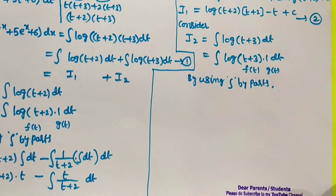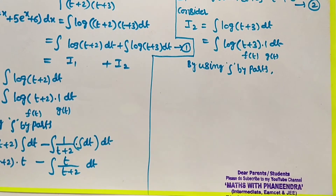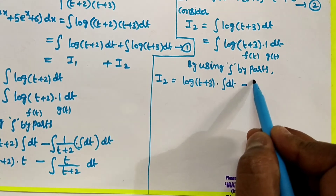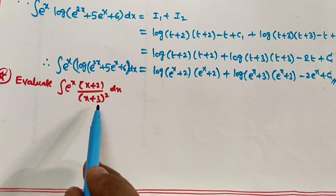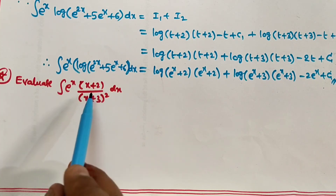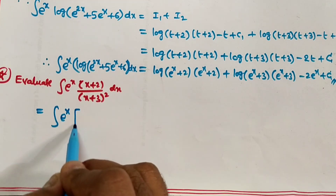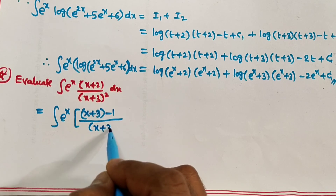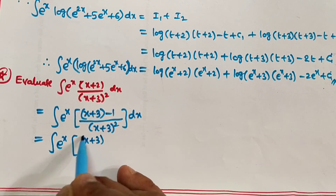By integration by parts: I₁ = log(t+2)·∫1 dt − ∫[d/dt log(t+2) · ∫1 dt] dt. The derivative of log(t+2) is 1/(t+2). So I₁ = log(t+2)·t − ∫t/(t+2) dt. To handle t/(t+2), add and subtract 2 in the numerator: t = (t+2) − 2.